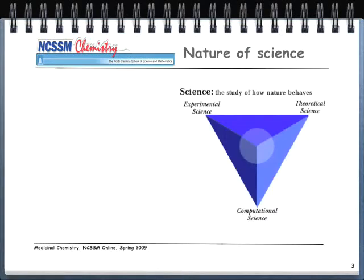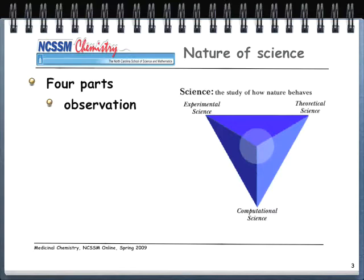Science is the study of how nature behaves, and there are three classic types. Observational science is the foundational way of doing science. The most well-known example is Jane Goodall, who spent years in the jungles of Africa observing primates. She didn't do experiments, didn't come up with theories, and didn't build computer models. She simply made observations in the field.